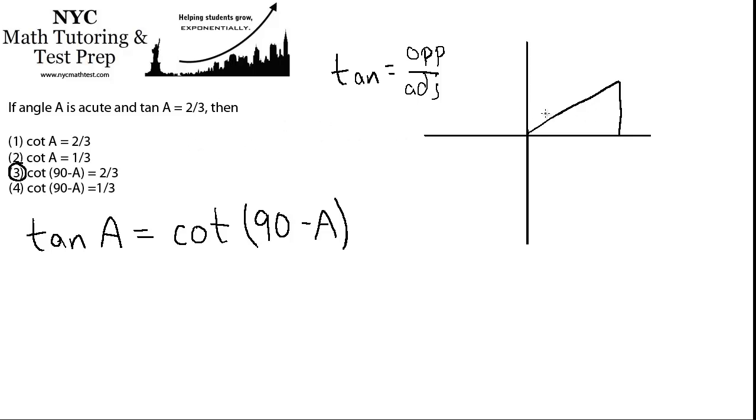So in this case, the opposite side—tangent A is two-thirds—so opposite is two, and the adjacent is three. So my question is, which triangle,